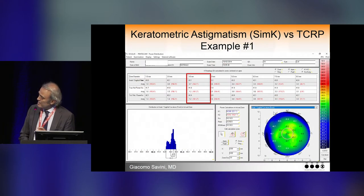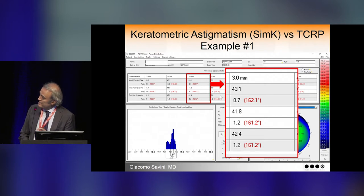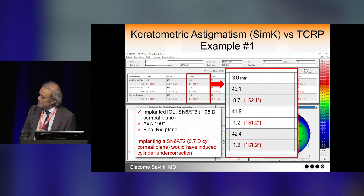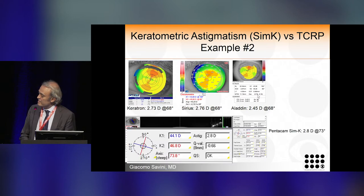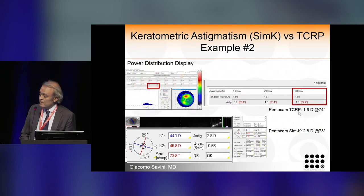Here is an example where K1 and K2 show 0.7 diopters of astigmatism but total corneal astigmatism is 1.2 diopters — this is against-the-rule. We implanted a T3 IOL correcting about 1.06 diopters at the corneal plane instead of a T2, and achieved plano refraction. In the opposite case, with-the-rule astigmatism with Pentacam SimK at 2.8 diopters, but the TCRP gives 1.8 diopters — one diopter less.